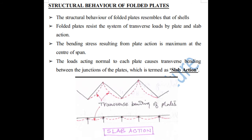So what is plate action and what is slab action? The bending stress resulting from the plate action is maximum at the center of span. The loads acting normal to each plate cause transverse bending between the junctions of the plate — this phenomenon is called the slab action. As you can see in the diagram, the loads are acting 90 degrees to each plate and transverse bending is shown by a red dotted line.